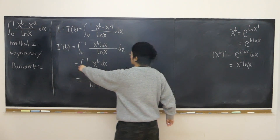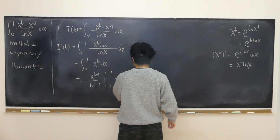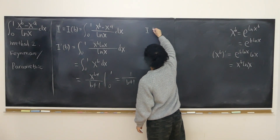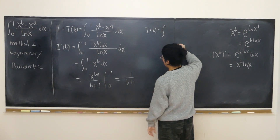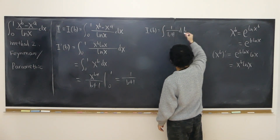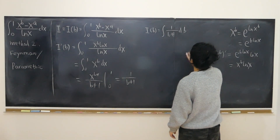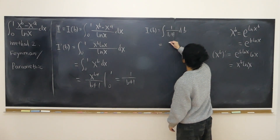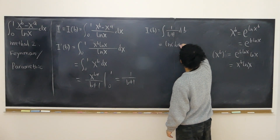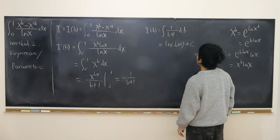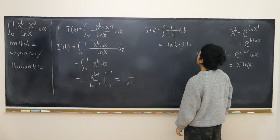So this is I'(b). The anti-derivative of this is I(b), the indefinite integral of 1/(b+1) db, where b is my variable. Remember we have to have a plus C at the end, so this simply becomes log(b+1) plus C.